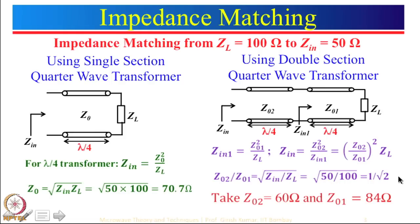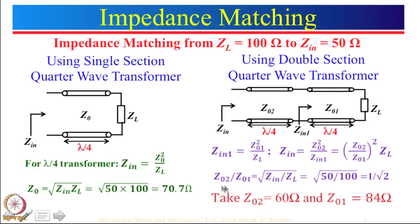You can see that there is only one equation and there are two unknowns. That means we have to choose one of the values — we have the freedom to choose different values of Z01. Let us just take some cases: if Z02 is 50 then Z01 will be 70.7 ohm; we can take Z02 as 100, in that case Z01 will be 100 times square root 2, which is 141; or we can take Z02 as 10 and then Z01 will be 14 ohm.